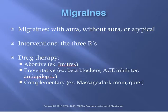Migraines fall into three categories: migraines with aura, migraines without aura, and an atypical migraine. An aura is a sensation such as visual changes that signals the onset of a headache — people can also have auras with epilepsy or a seizure disorder. In your textbook, review table 44-1 for key features of migraines. Auras can also be smells or visual disturbances.